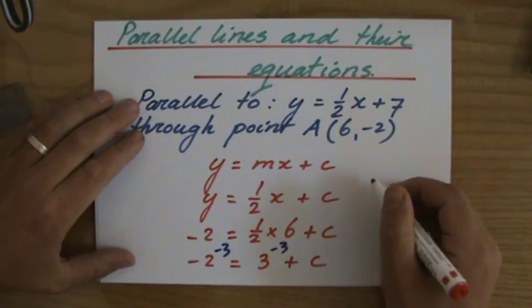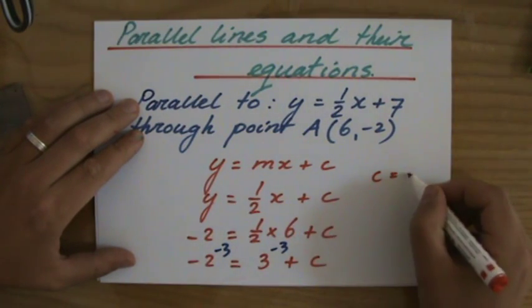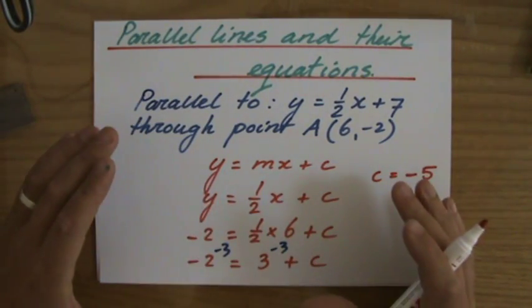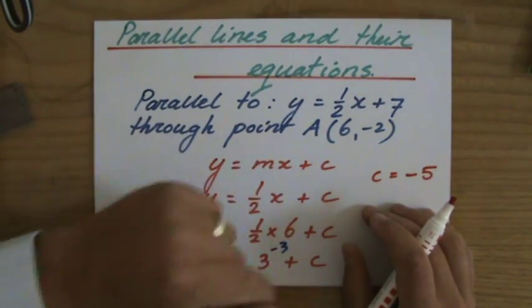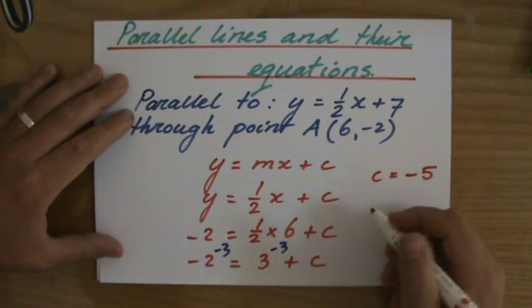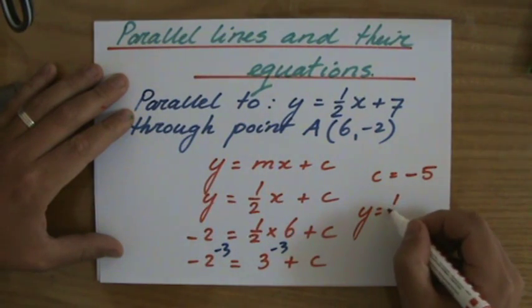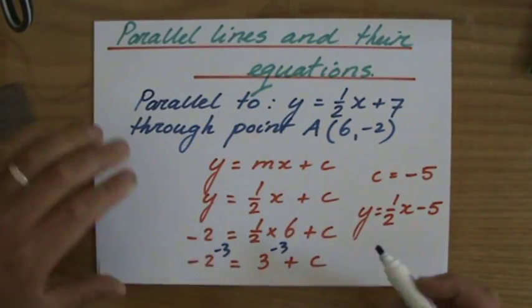And then c, if I just continue here, equals minus 2 minus 3, which is minus 5. So the equation of my line, which is parallel to y equals a half x plus 7 and which goes through point A (6, minus 2), is y equals a half x minus 5. There you go.